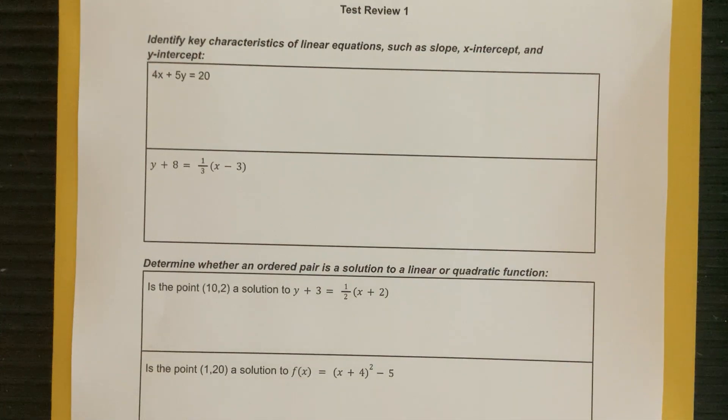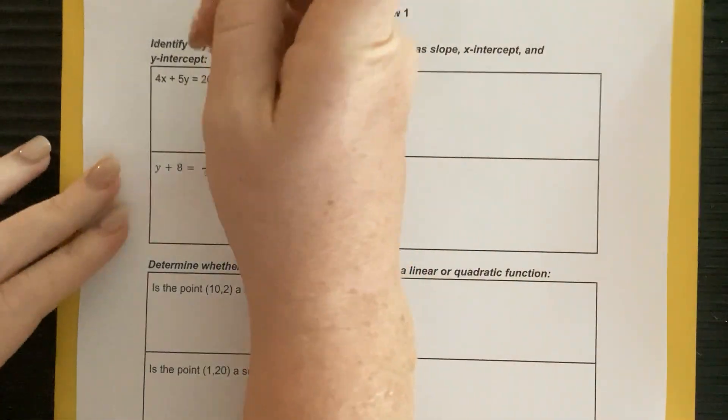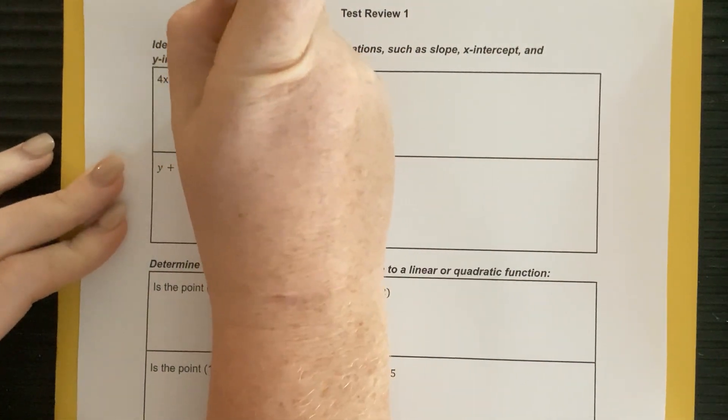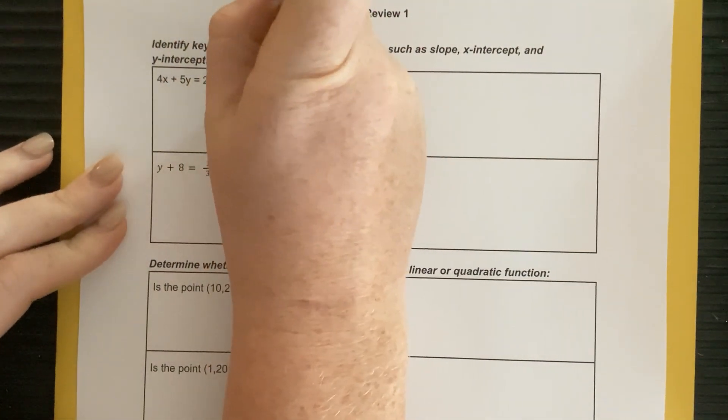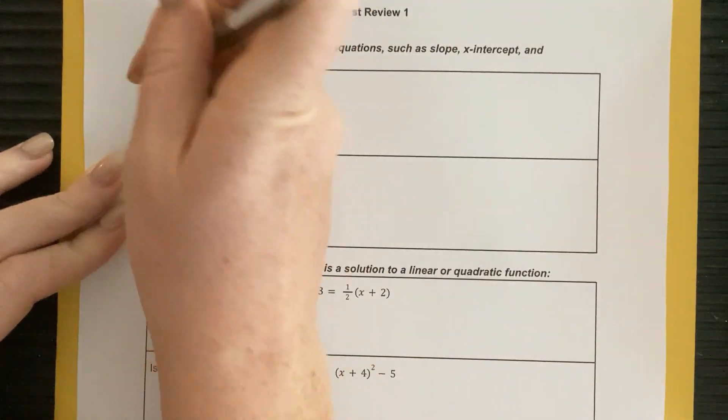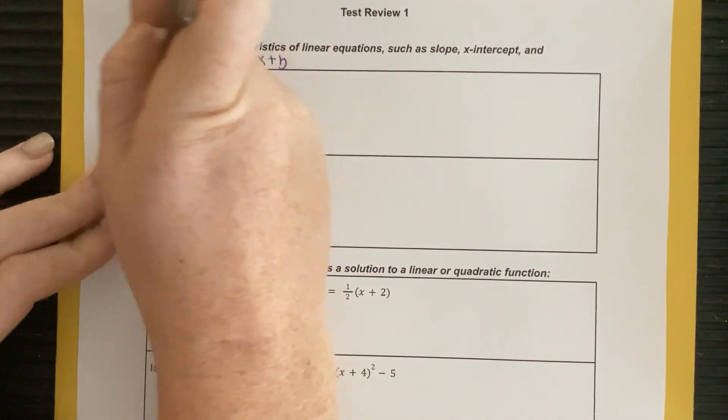On this first one, that's written in standard form, so if we want to find slope and y-intercept really easily, we can always put it in that y equals mx plus b. That's always a good place to start. So if I went ahead and I solved for y,